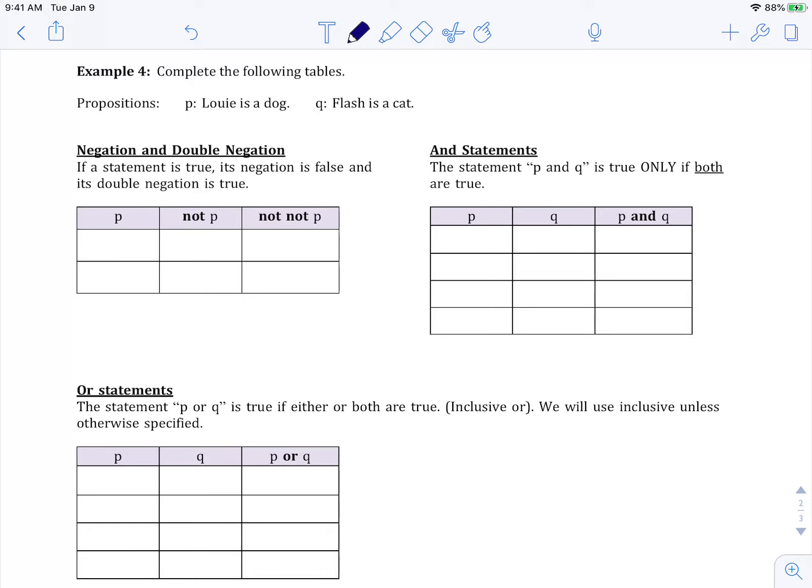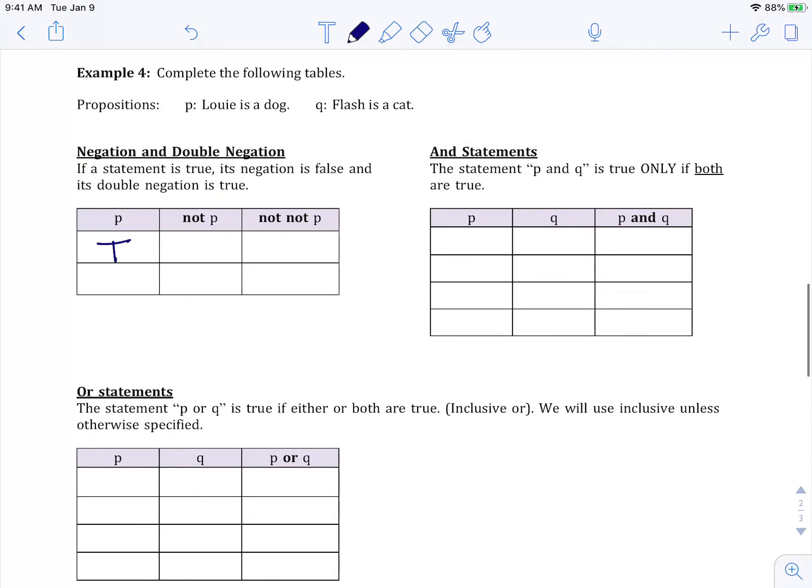So here we're going to do a negation and double negation table. We're just going to focus on P for now. So the only options for P are it's true or it's false. So Louie is either a dog or Louie is not a dog. And the negation of that, the not P, mathematically the symbol I could use is a tilde. That means the same thing. Well, that's just the opposite of what I said. So that means this is false and this is true. Now the double negation, our symbols could look like this, is just the opposite of the not P. So then I'm going to do the opposite of false, so that's true. The opposite of true, that's false.